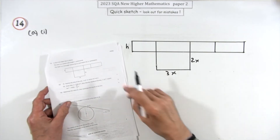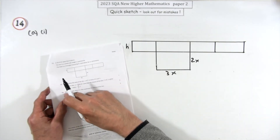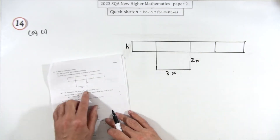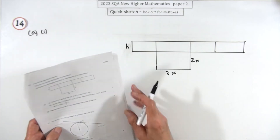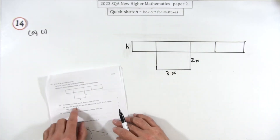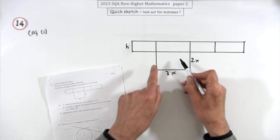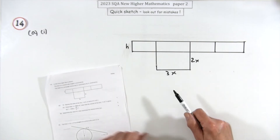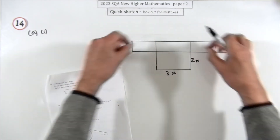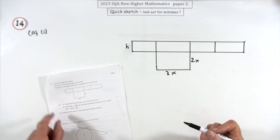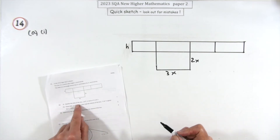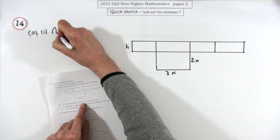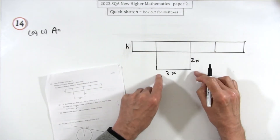Number 14 is the optimization question — Part A and Part B, the dreaded Part A, but they're always really straightforward. You've got the net of a box: if you break a box open flat with no top, that's what it looks like. There's the base, and those four parts wrap around it. First, find the area of that net, which is made up of five parts.